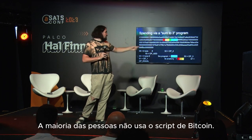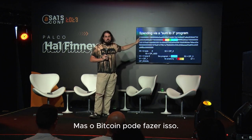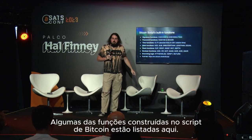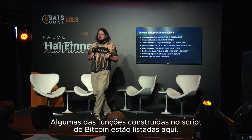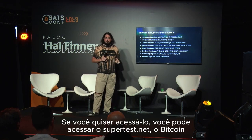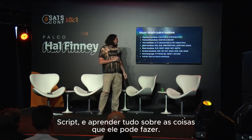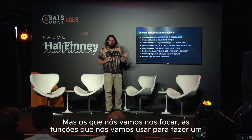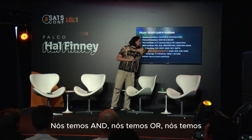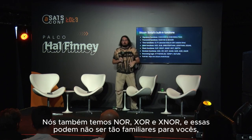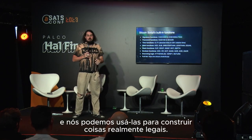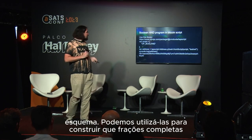This is Bitcoin Script — very little used. Most people just use signatures and public keys, but Bitcoin can do this, and we're going to use it to build our binary circuits. Some built-in functions of Bitcoin Script include all the Boolean functions: AND, OR, NOT, NAND, NOR, XOR, and XNOR. These are what we're going to use to build complete Boolean circuits.